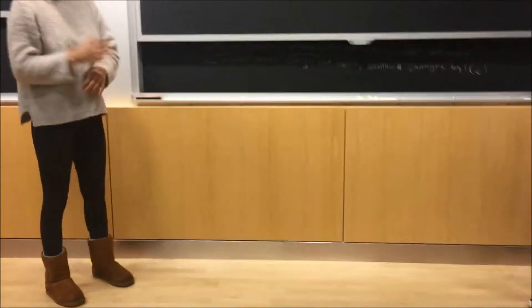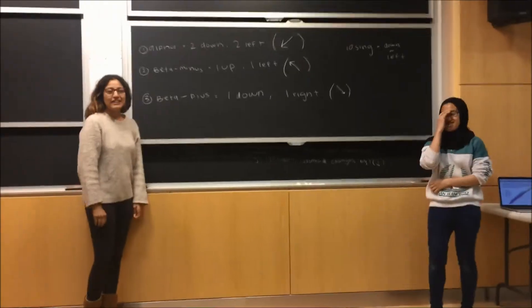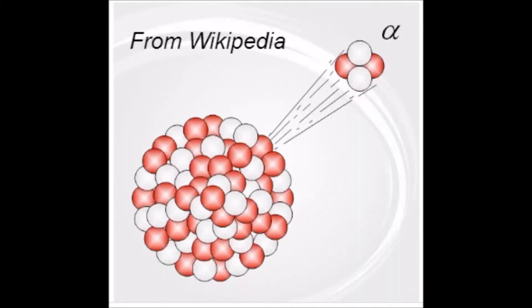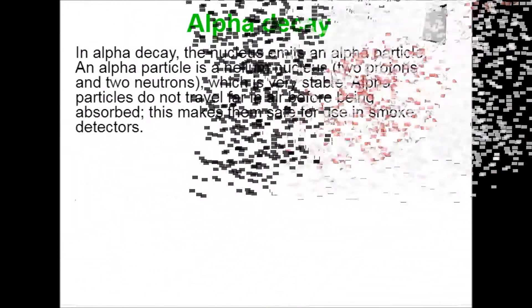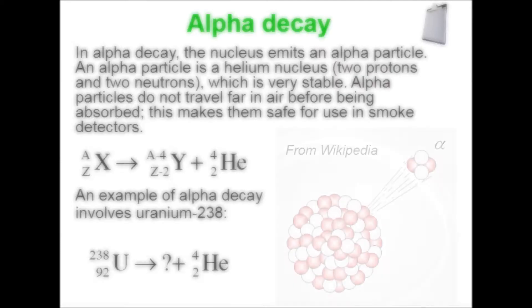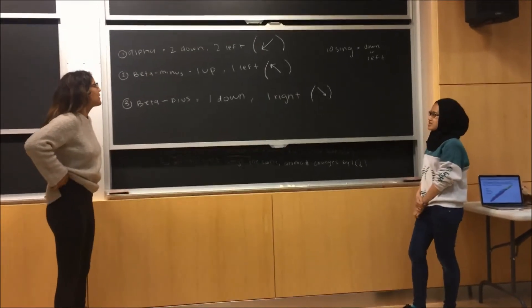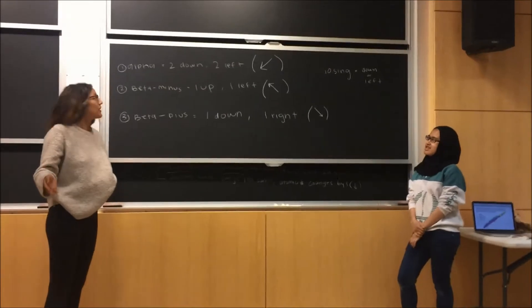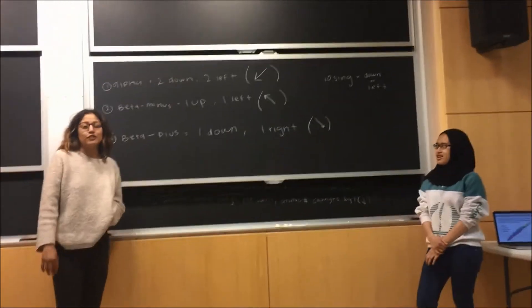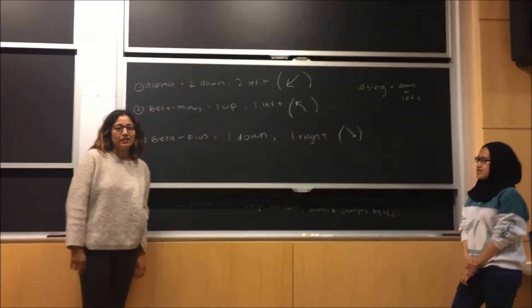So Ali and Raha, what in the world is alpha, beta plus, beta minus decay? I'll explain alpha first. So alpha is losing a helium. And because you're losing a helium, you go two down and two left, which basically just means you lose two protons and you lose two neutrons.